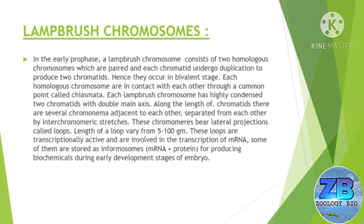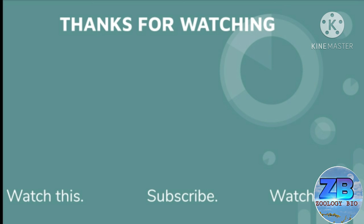Along the length of the chromatids there are several chromomeres adjacent to each other, separated from each other by interchromomeric stretches. These chromomeres bear lateral projections called loops. The length of a loop varies from 5 to 100 micrometers. These loops are transcriptionally active and are involved in the transcription of mRNA. Some of them are stored as informosomes — mRNA plus protein — for producing biochemicals during early developmental stages of the embryo.